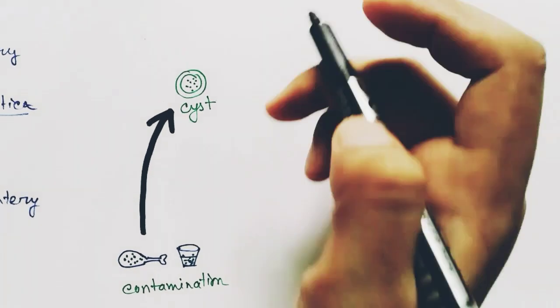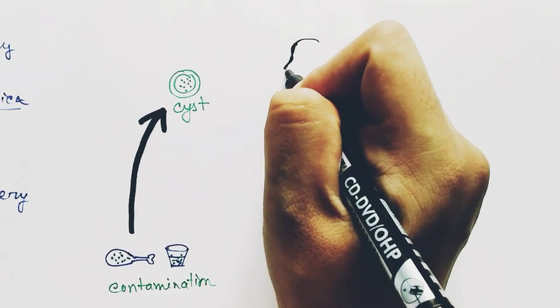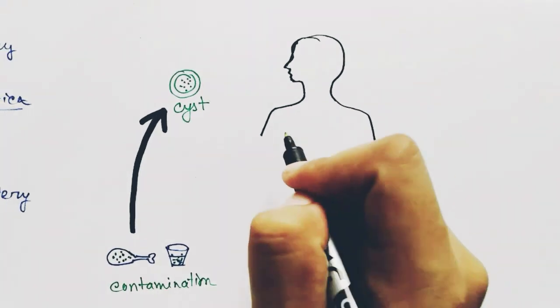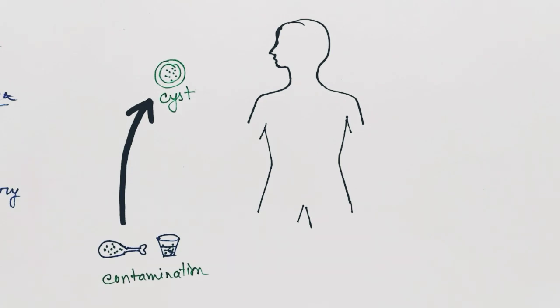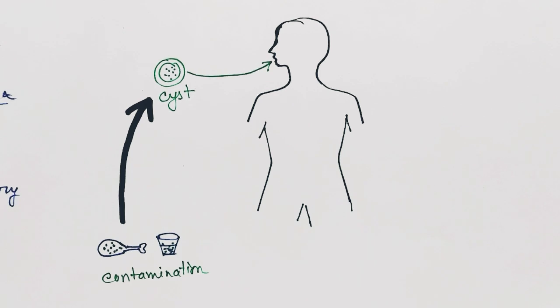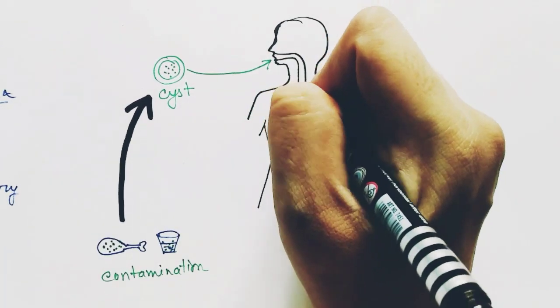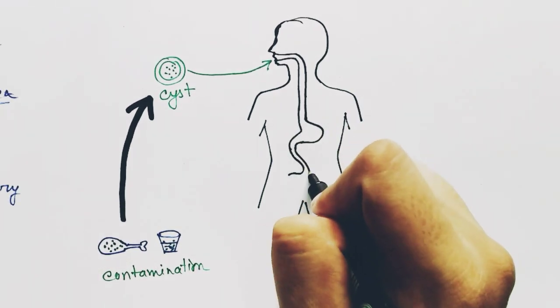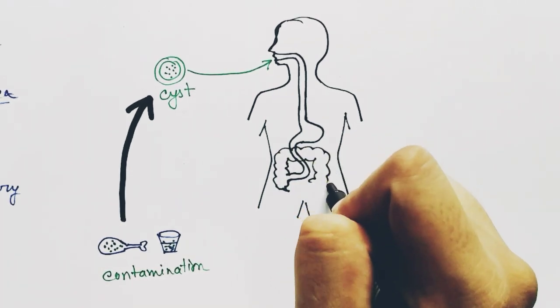The cyst gets inside our body through our mouth and travels throughout the gastrointestinal tract. This is our body and the GI tract starting from the mouth, going through the stomach, reaching the small intestine, which opens into the large intestine, and the large intestine ends in the rectum.